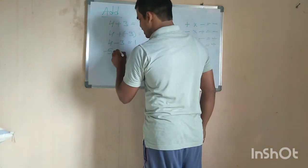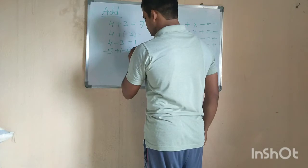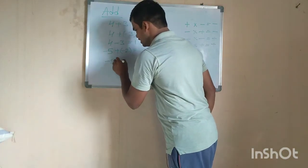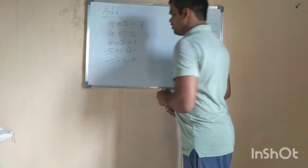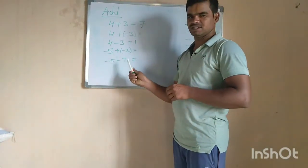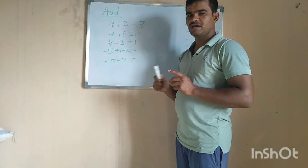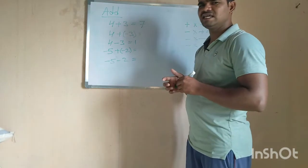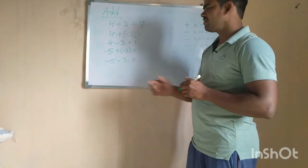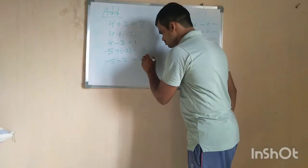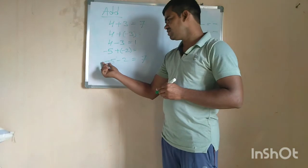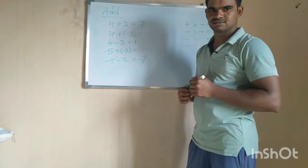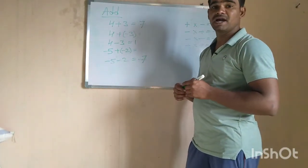Now let's look at minus 5 plus minus 2. So we have minus 5, and plus times minus gives us minus, so it becomes minus 5 minus 2. When adding two numbers with the same sign, just blindly add the values: 5 plus 2 equals 7, and give the same sign — which is minus. So minus 5 minus 2 equals minus 7.